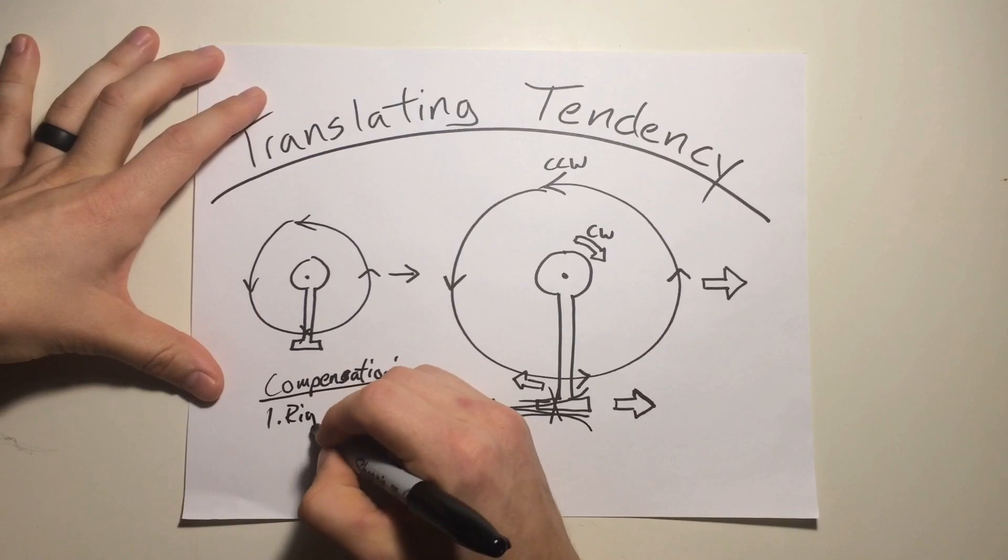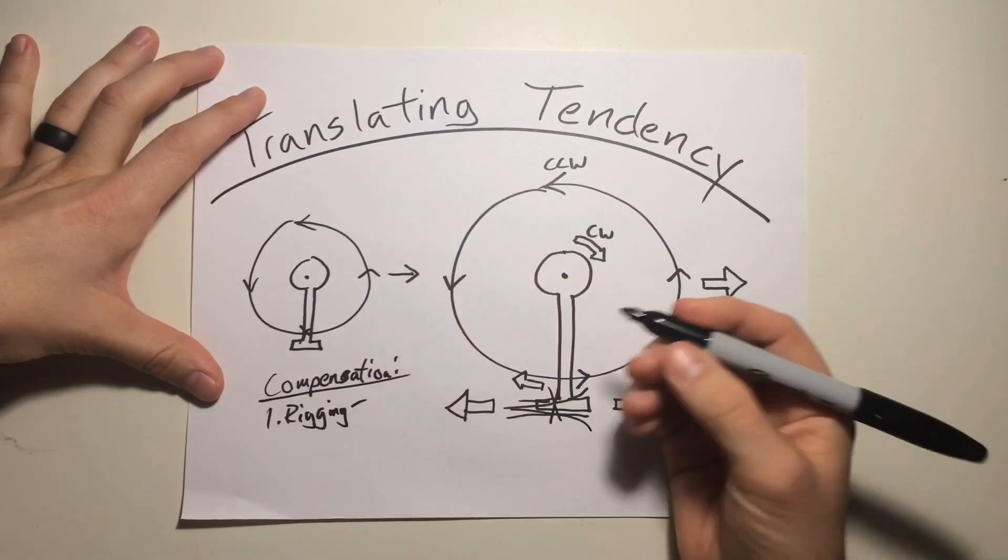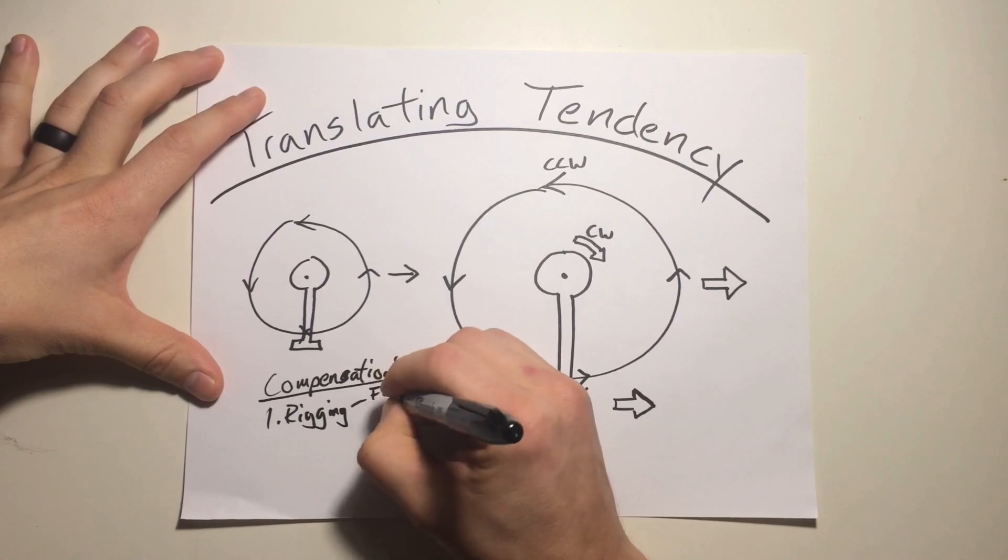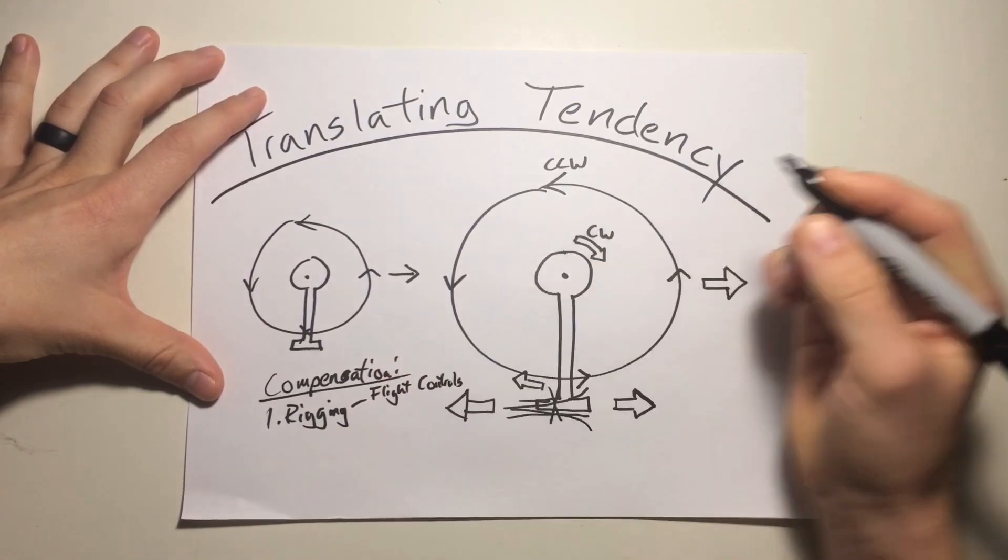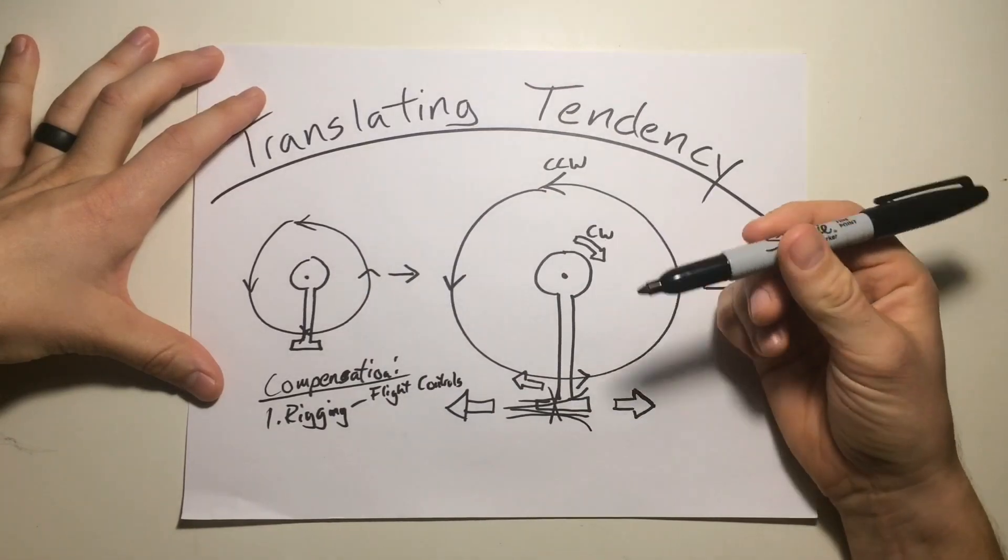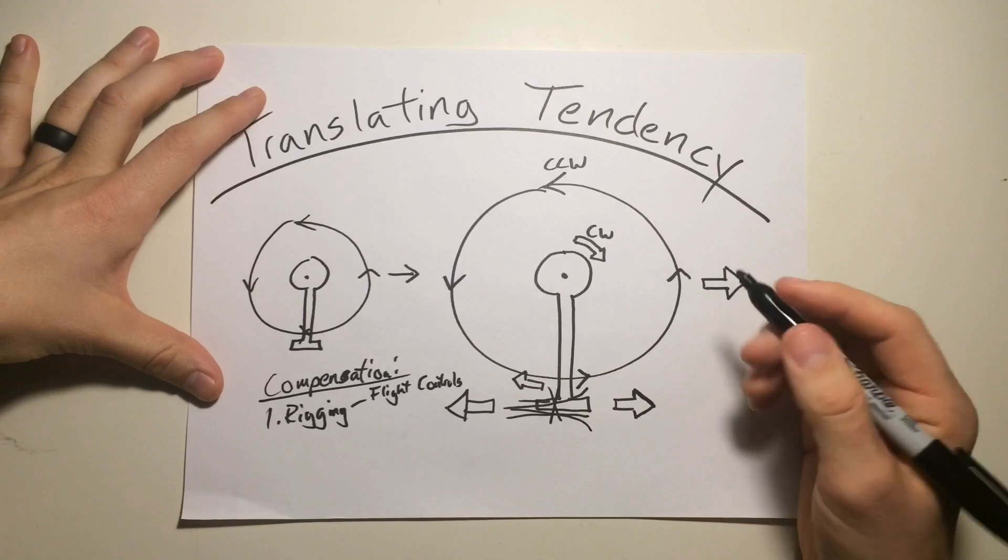Well, one way is rigging. And what do I mean by rigging? You can either rig the flight controls, and this means that you rig the flight controls so that you already have just a slight increase in pitch to fight this right drift.